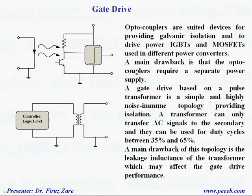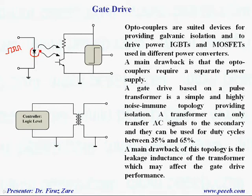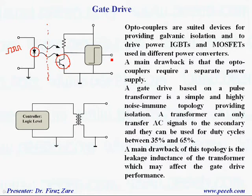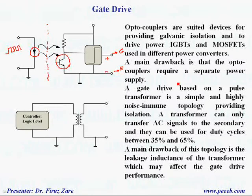To achieve galvanic isolation, there are different configurations. One method is using an optocoupler: when we have a voltage from the controller, we apply it to the diode — turning the diode on and off — and at the same time on the secondary side, a transistor can be turned on and off. This part is isolated, and we get the signal across the output, which is totally isolated from the input side. We then apply this signal to the gate and this one to the emitter. A drawback is that this requires a separate power supply.